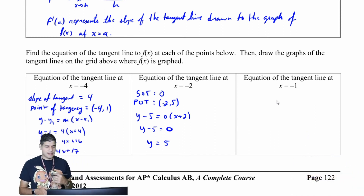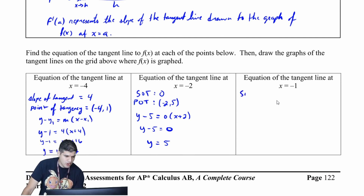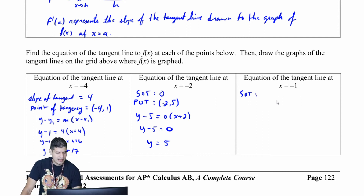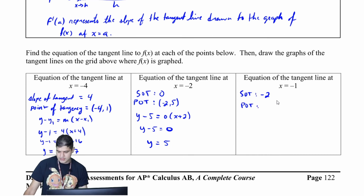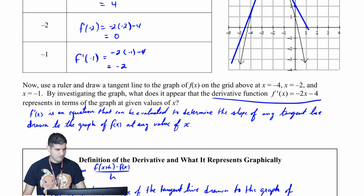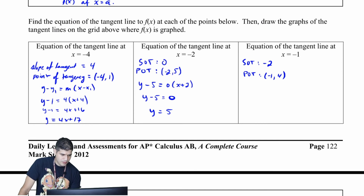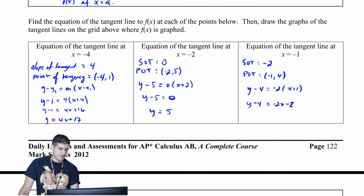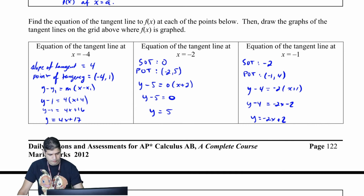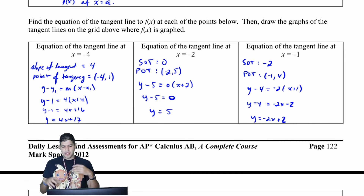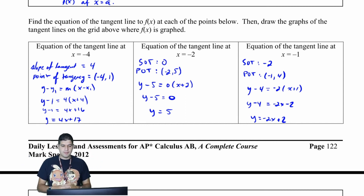We have one more — the equation of the tangent line at x equal to negative 1. The slope is negative 2, and the point of tangency is negative 1 comma 4. So y minus 4 equals negative 2 times x plus 1, giving y minus 4 equals negative 2x minus 2, and then y equals negative 2x plus 2. It would be very helpful to graph these lines on a separate sheet and line them up with the graph above.